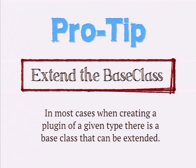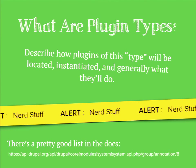Not every plugin type provides a base class, but in my experience all of the ones I've attempted to implement do have base classes you can extend. So that's the basics of creating a plugin: know the plugin type, extend the base class, and make sure you're conforming to the contract — blocks have a build method, fields have a couple of different methods you have to implement in order for Drupal to be able to call those.